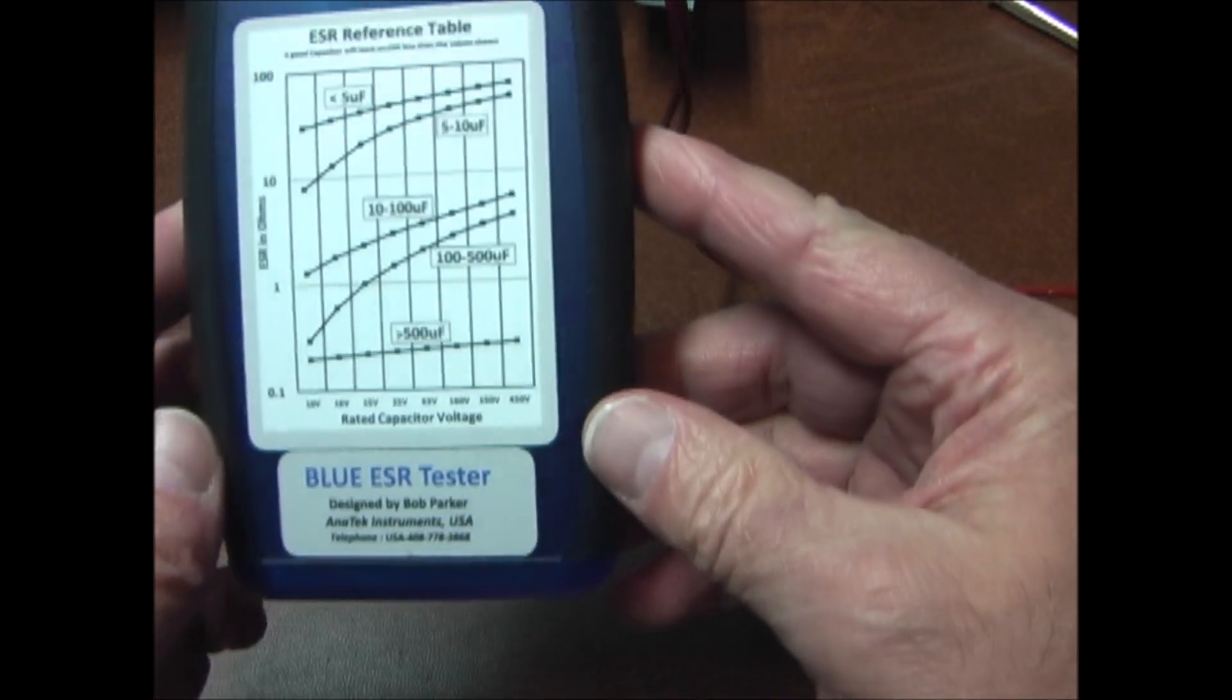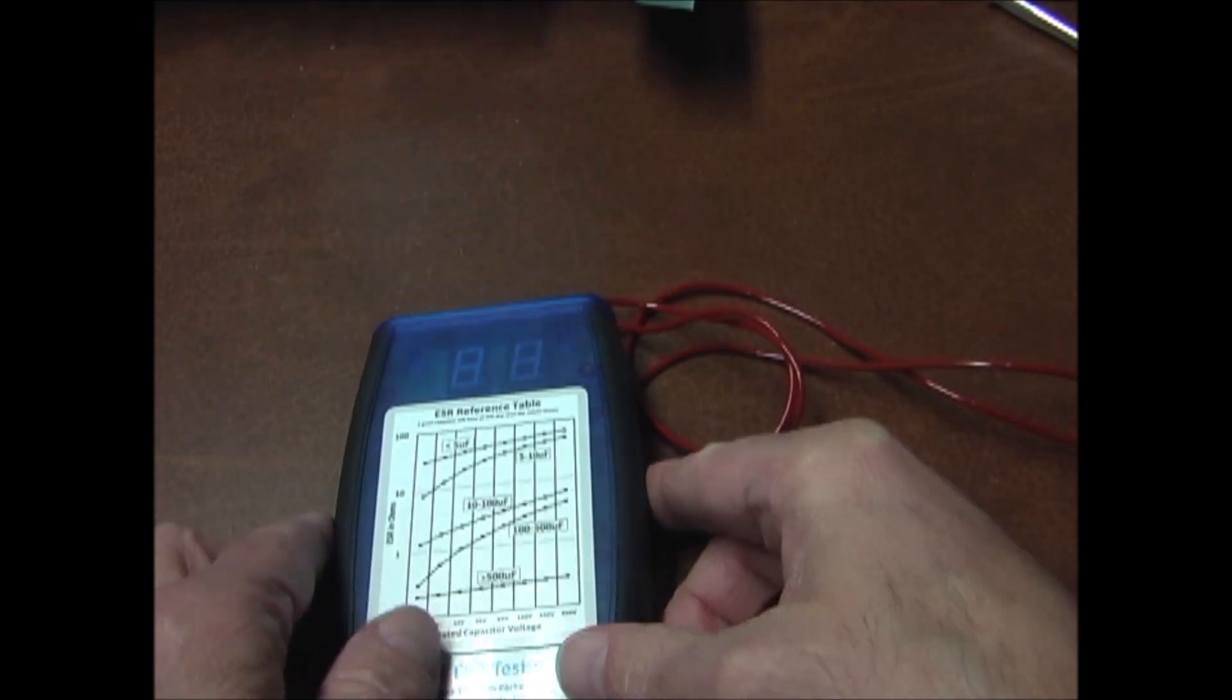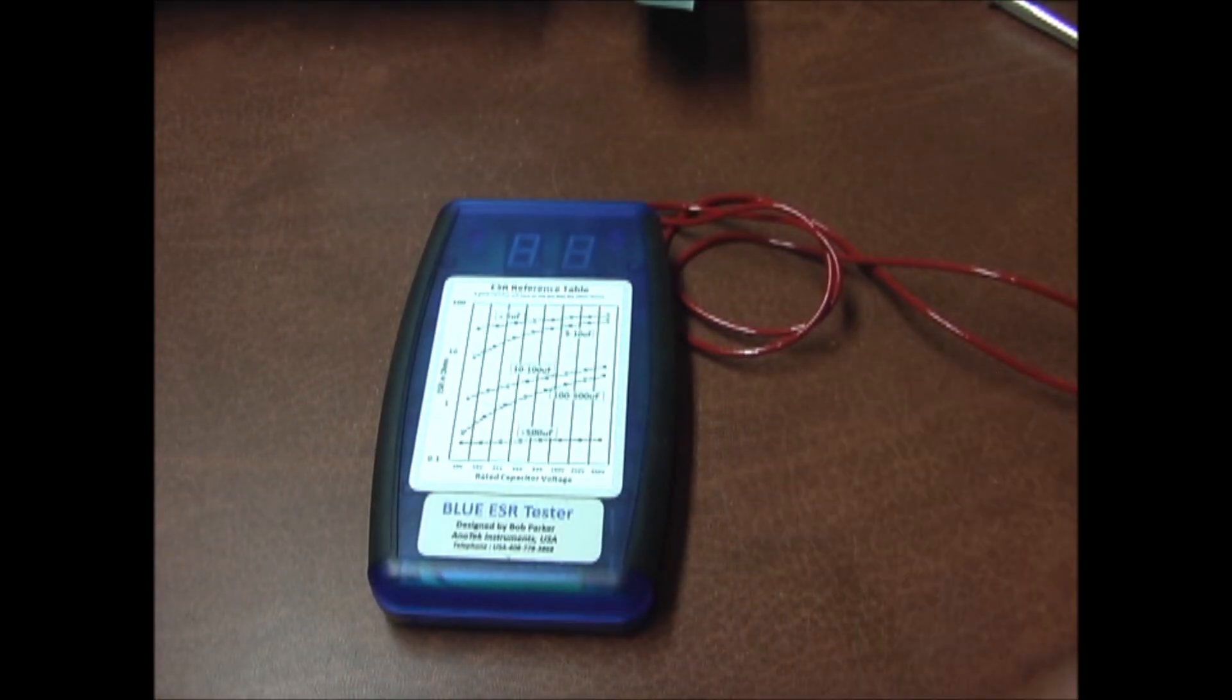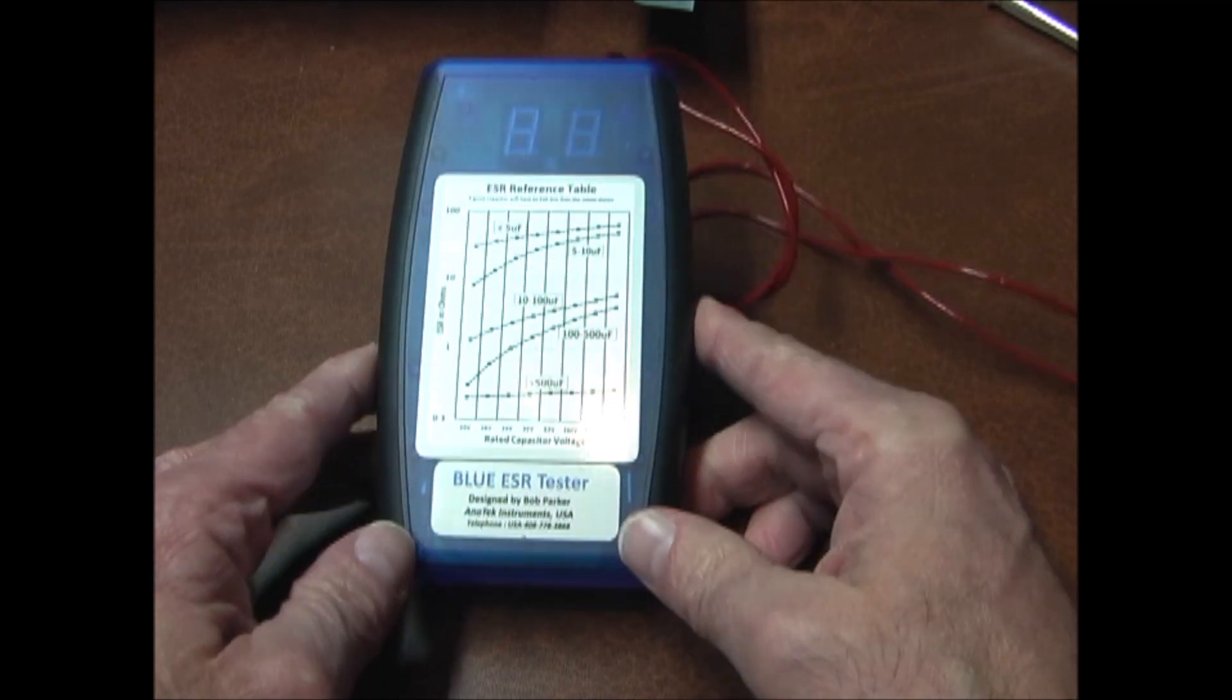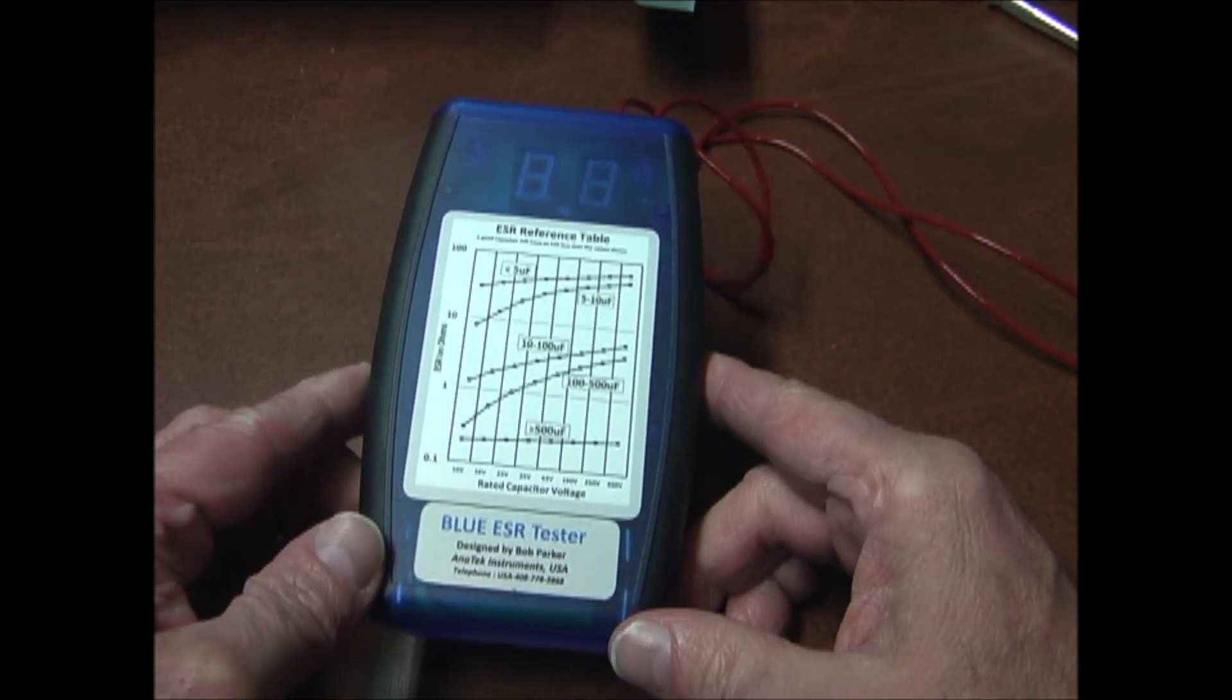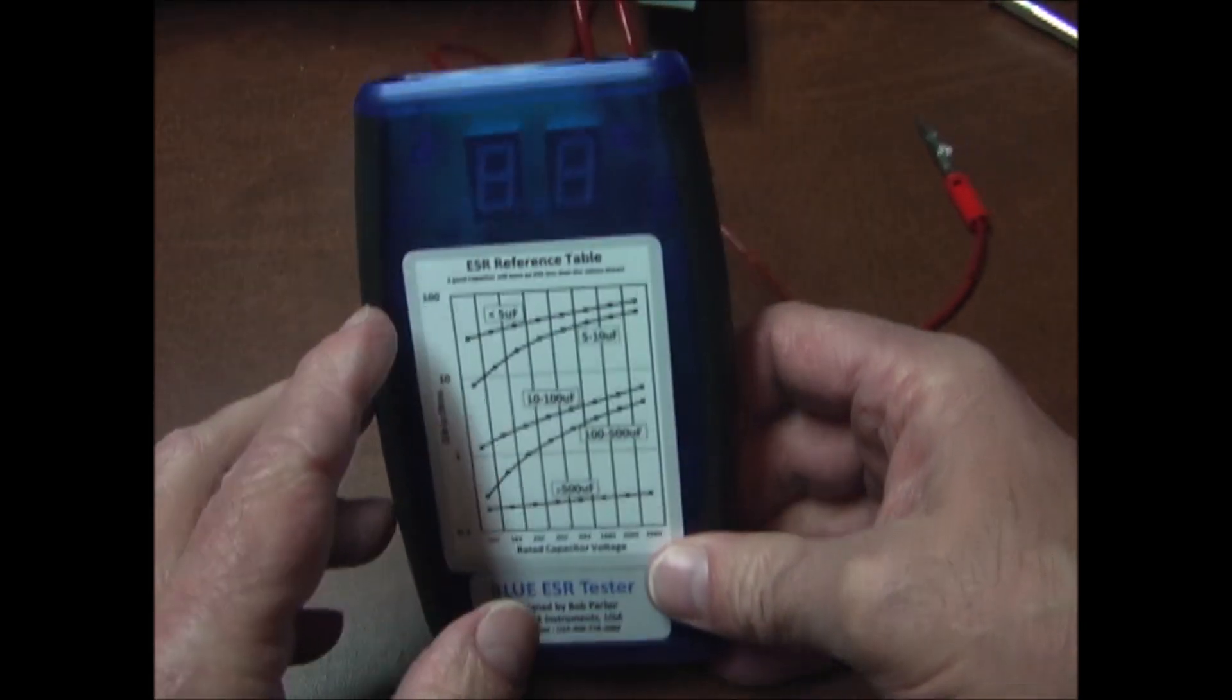I have the Blue ESR tester from Anatec Instruments. This is used to check the ESR or equivalent series resistance of capacitors. It puts out a very tiny voltage so you can check capacitors in circuit.